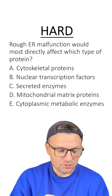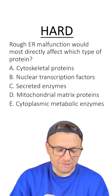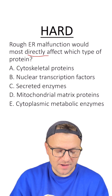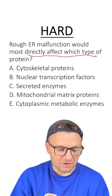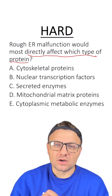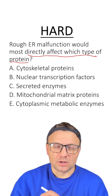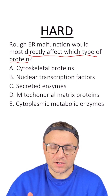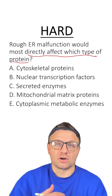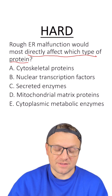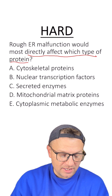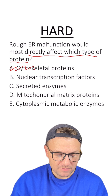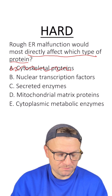Here's the hard question: rough ER malfunction would most directly affect which type of protein? Remember that the rough ER makes proteins that are going to be extracellular — ones that go outside of the cell. Option A: cytoskeletal proteins? No, those are found within the cell, so that's not our answer.